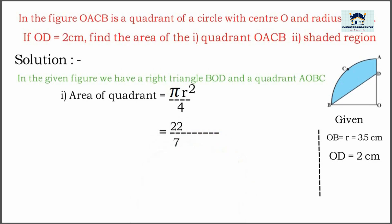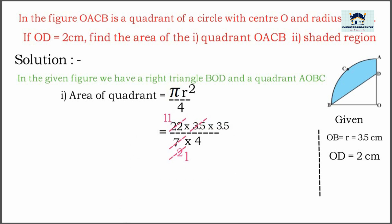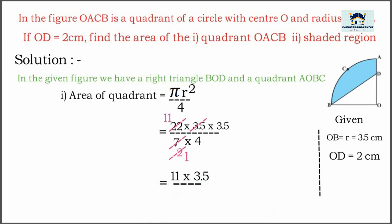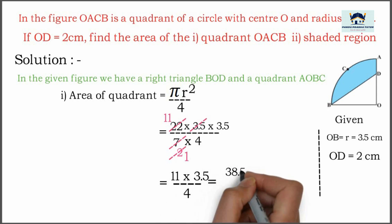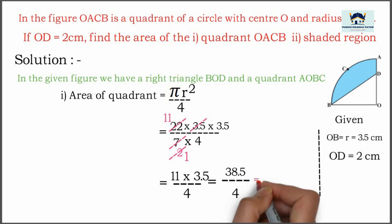Area of quadrant equals pi r squared divided by 4, which is 22 divided by 7 into 3.5 into 3.5, all divided by 4. Simplifying: 22 into 3.5 is 77, divided by 4. Computing 22 divided by 7 into 3.5 divided by 4 gives 38.5 divided by 4, which is equal to 9.625 square centimeter.